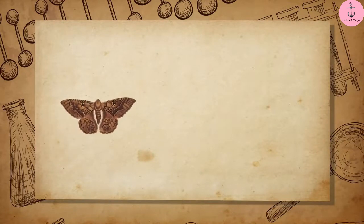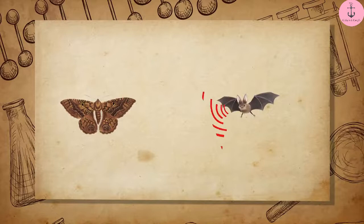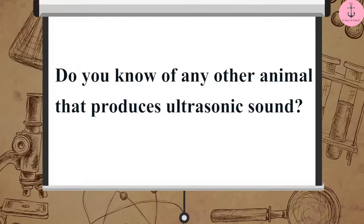Moths have very sensitive hearing equipment, due to which they can hear the higher frequency noise of the bat when it is nearby and take measures to avoid it. Do you know of any other animal that produces ultrasonic sound?